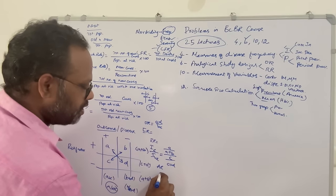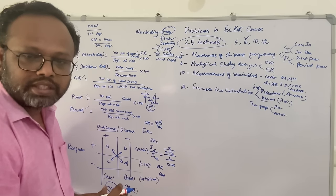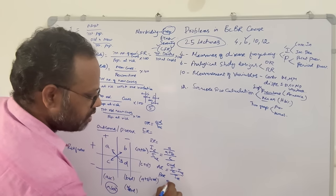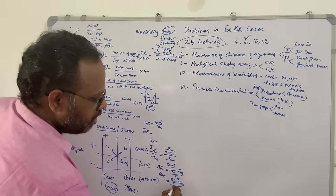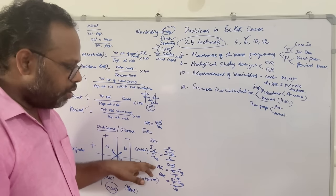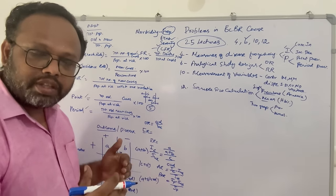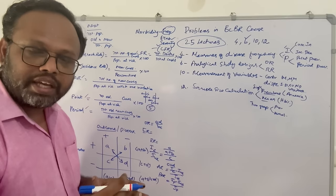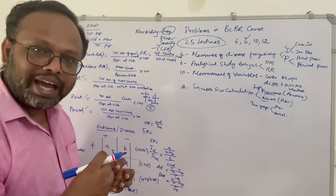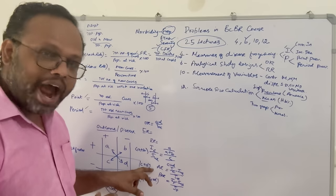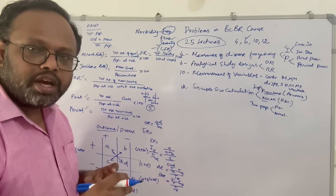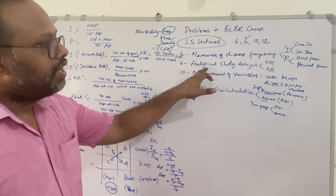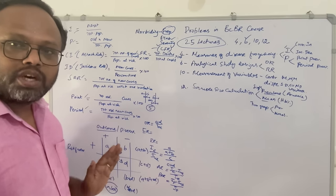We can also calculate attributable risk and population attributable risk, which are not in the BCBR course, but good to know. Attributable risk is incidence among exposed minus incidence among unexposed, divided by incidence among exposed. Population attributable risk is incidence among the population minus incidence among unexposed, divided by incidence among the population. Relative risk tells how much higher risk the exposed have; attributable risk tells what proportion of disease is attributed to the exposure; population attributable risk tells how many cases would be reduced if the exposure were removed.